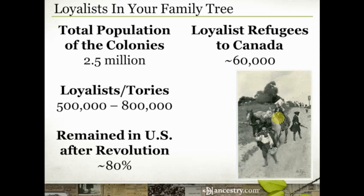The number of Canadian loyalist refugees is estimated to be at about 60,000. The numbers here are just to give you some perspective of where you might find your ancestors when you're looking for them. You'll note 60,000 is not 20% of a half a million, so where did the rest of the 20% that left the U.S. go? Between 13,000 and 15,000 people returned to Great Britain. The remainder of that 20% that left the United States ended up in other British colonies.